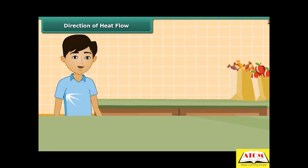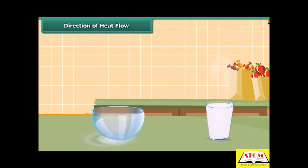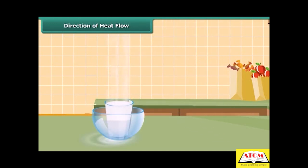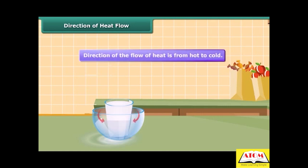Let us perform an activity to understand the concept of direction of heat flow. We place a glass of hot milk in a dish with cold water. After some time, the milk gets cooled and the water gets warm — both milk and water come to lie at the same temperature. The direction of the flow of heat is from hot to cold.